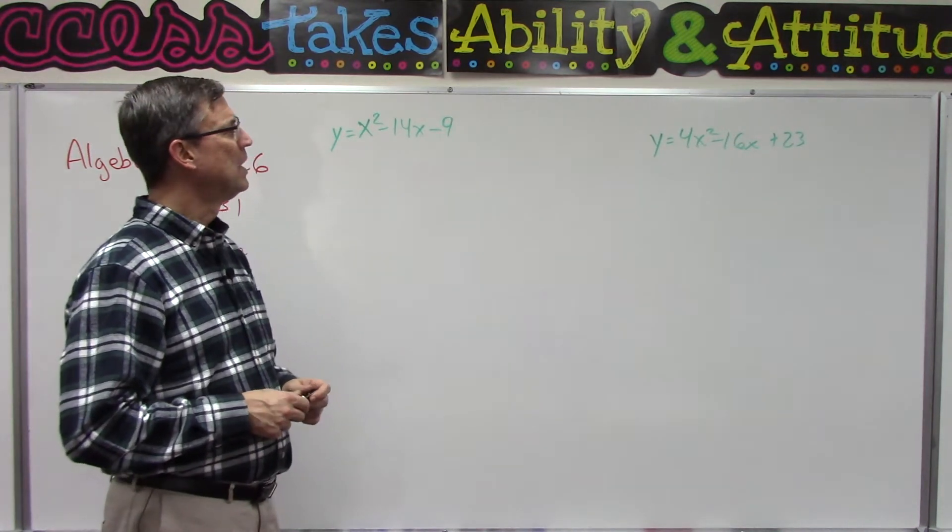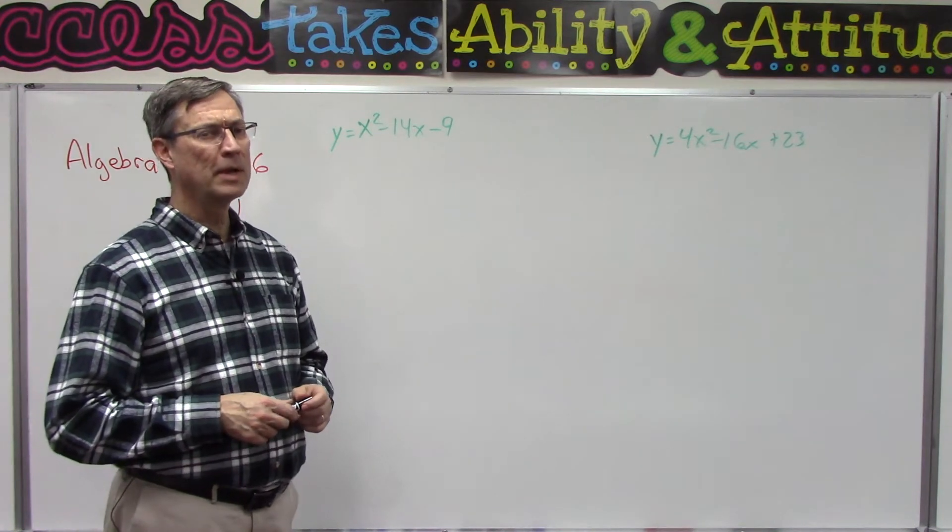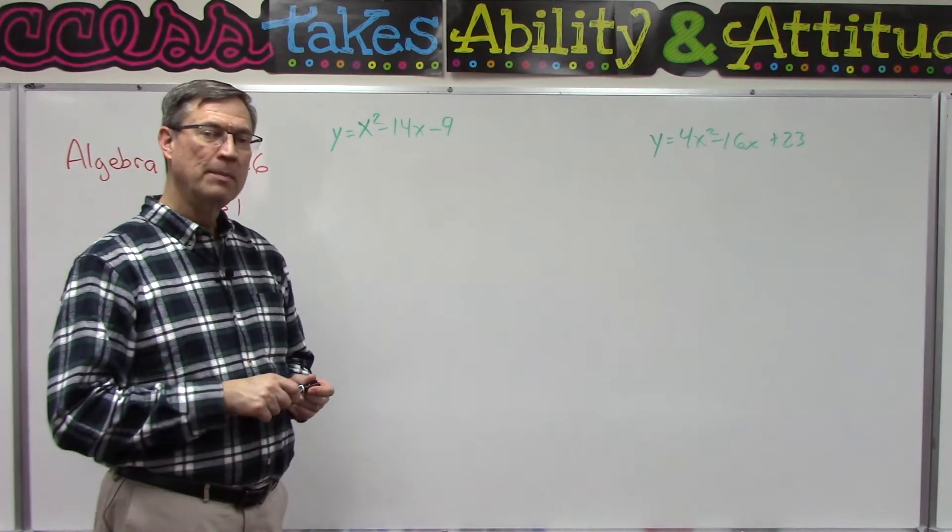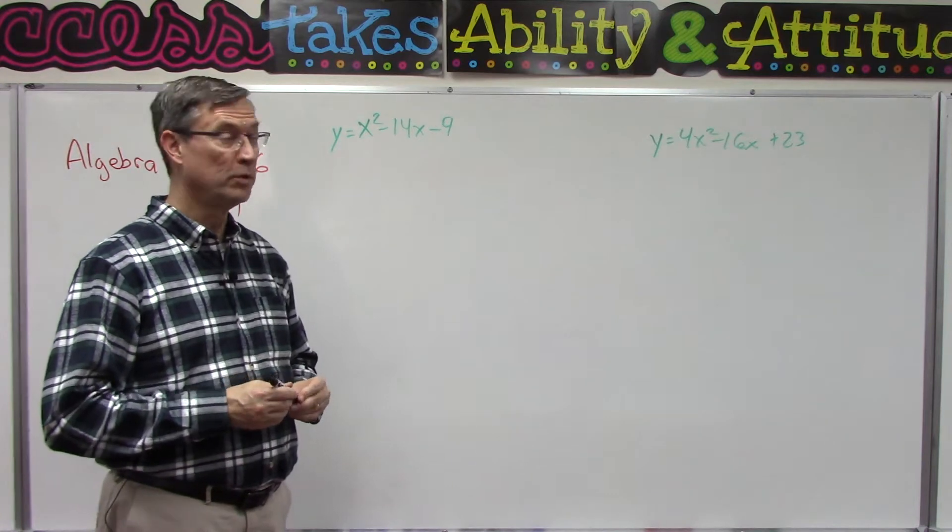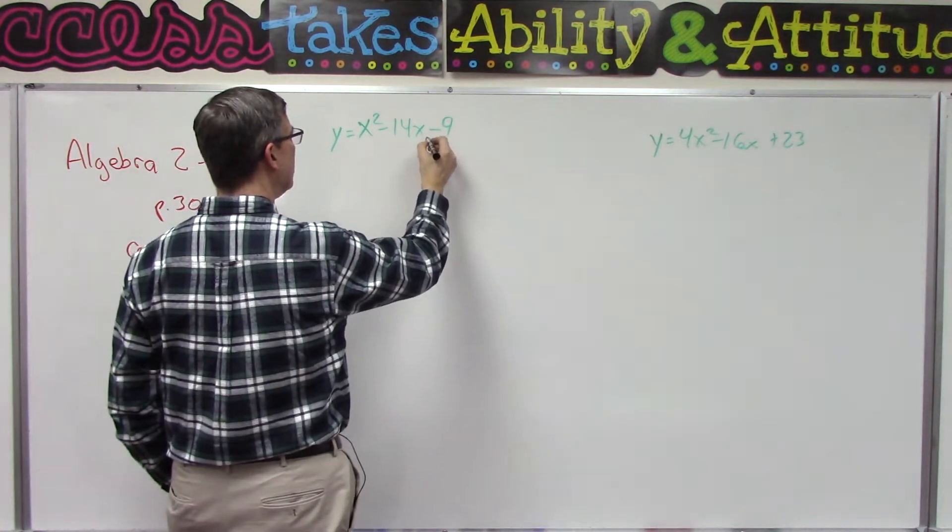I'm choosing two problems from the homework, but I'm not going to take you all the way to the end. I'll let you finish them, but I just want to make sure you get over the hump with both of them. So the first thing they tell us to do is to bring the constant term to the far right.